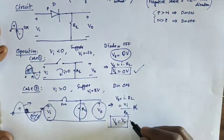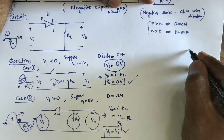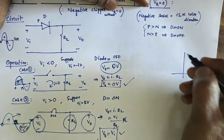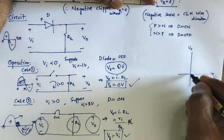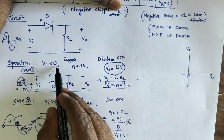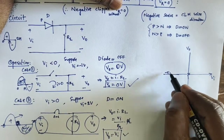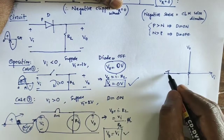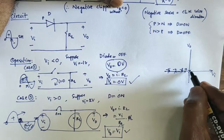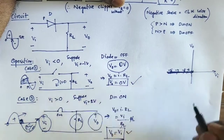Based on case 1 and case 2, we design the transfer function. The transfer function is represented with VI on the x-axis and V0 on the y-axis. The reference value is 0, because without reference it is 0. When VA is less than 0 — applying minus 5, minus 4, minus 3, minus 2 — the output value is 0 in all cases. Adding all these points gives a flat line at 0 for negative inputs.